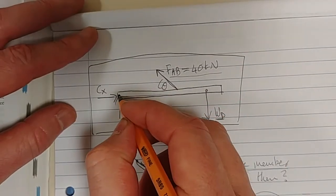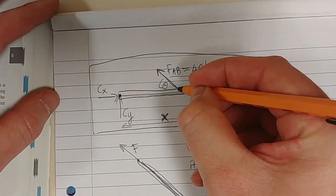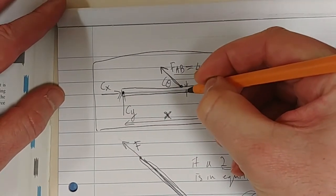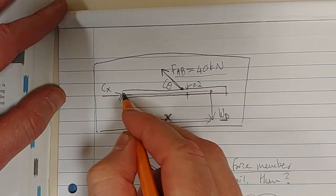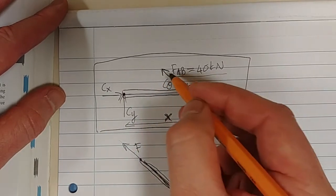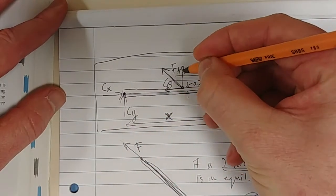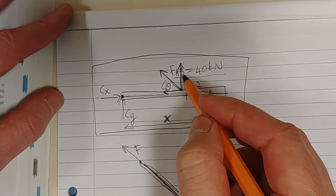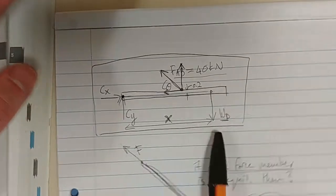So what's very important to realize is that that force AB is applied at 0.2 above this point here, right? So this force, the point is, this force, if you break it up into its X and into its Y, both of those forces, both of the components of FAB will cause a moment about C.